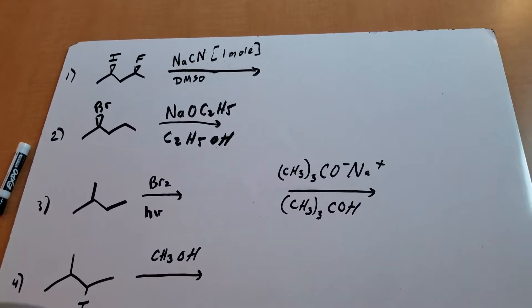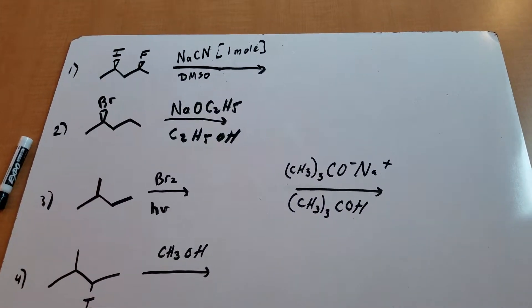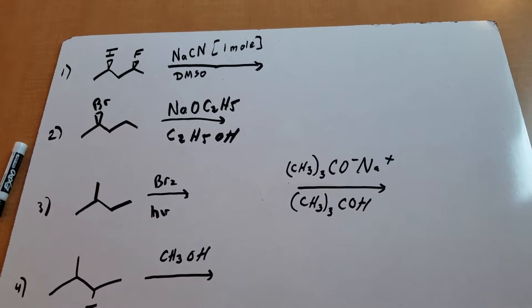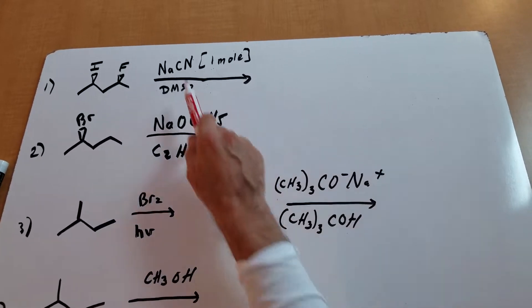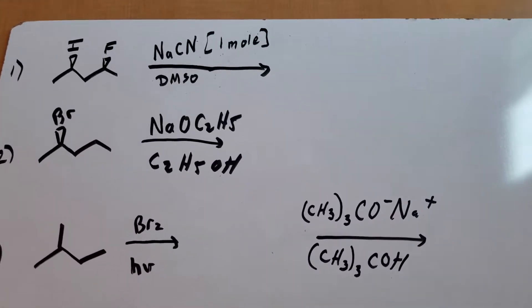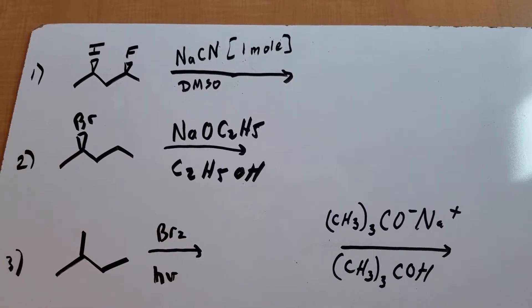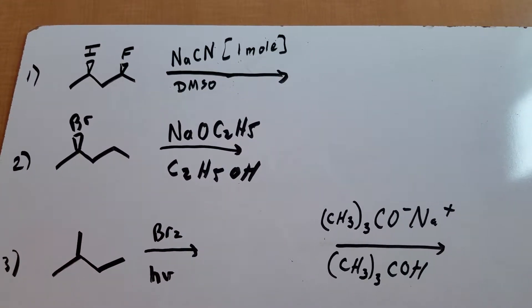Now in the first example you have two secondary halides and you have one mole of NaCN. If you ever see anything with cyanide, almost always it's going to be an SN2 reaction. Now since there's only one mole, we've got to decide which one of these groups is going to be the leaving group: iodine or fluorine.